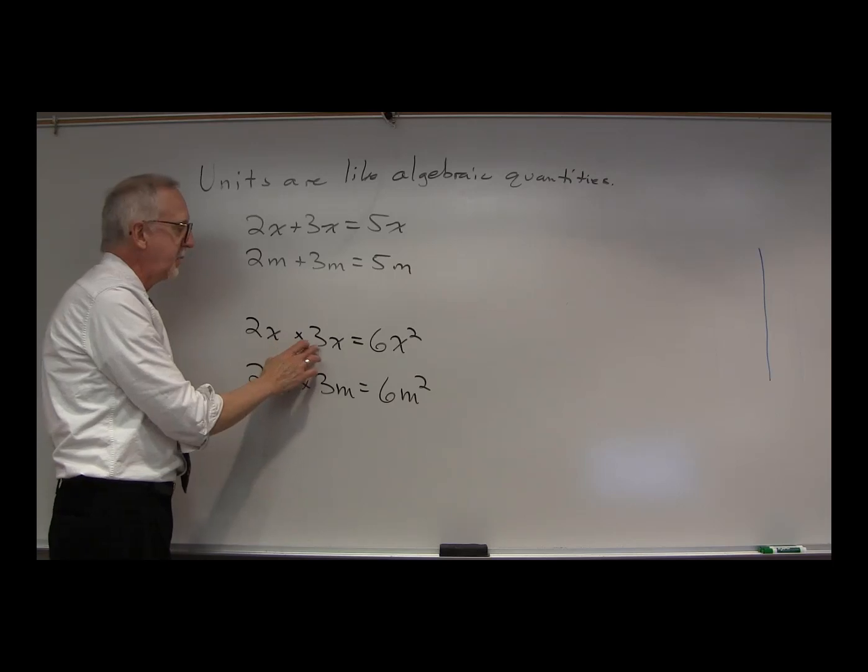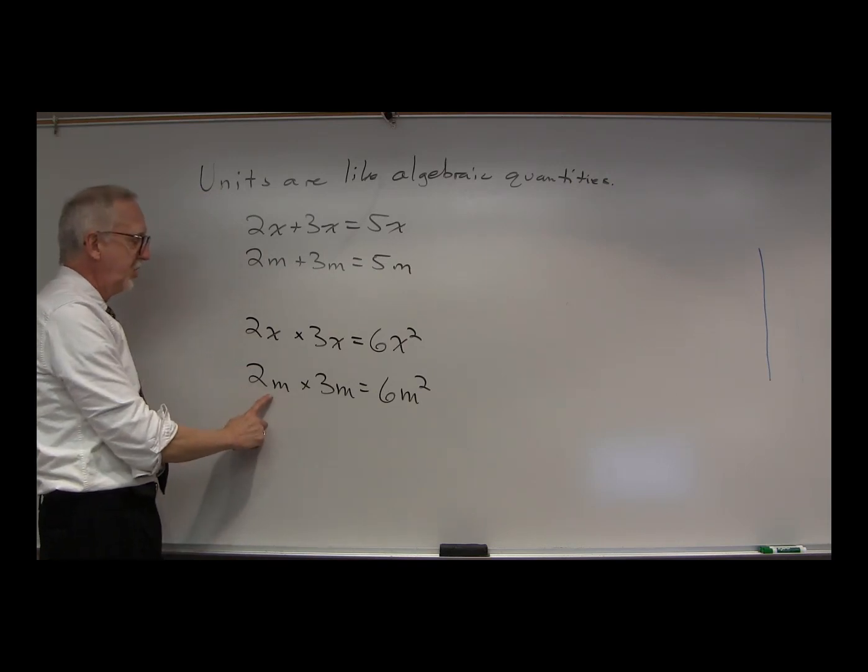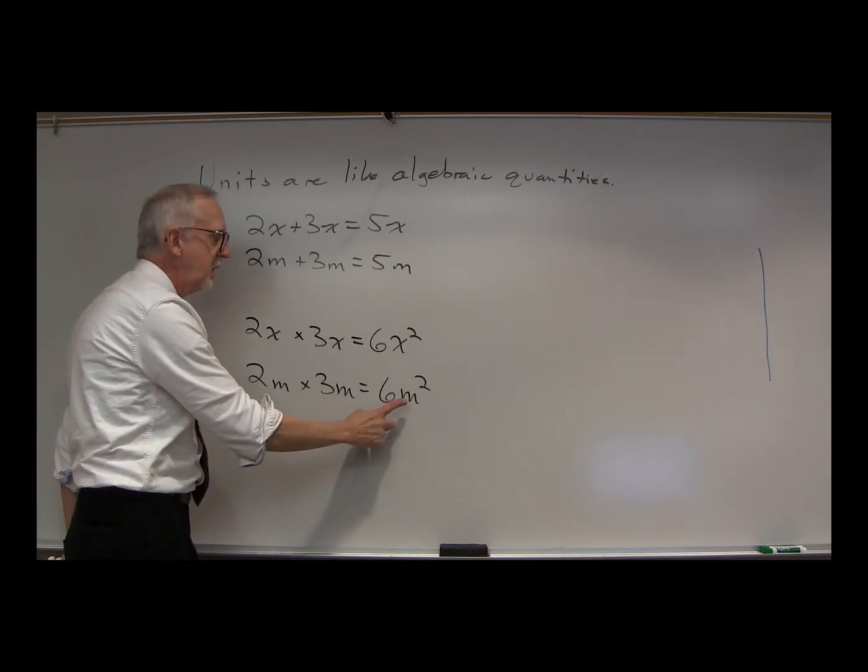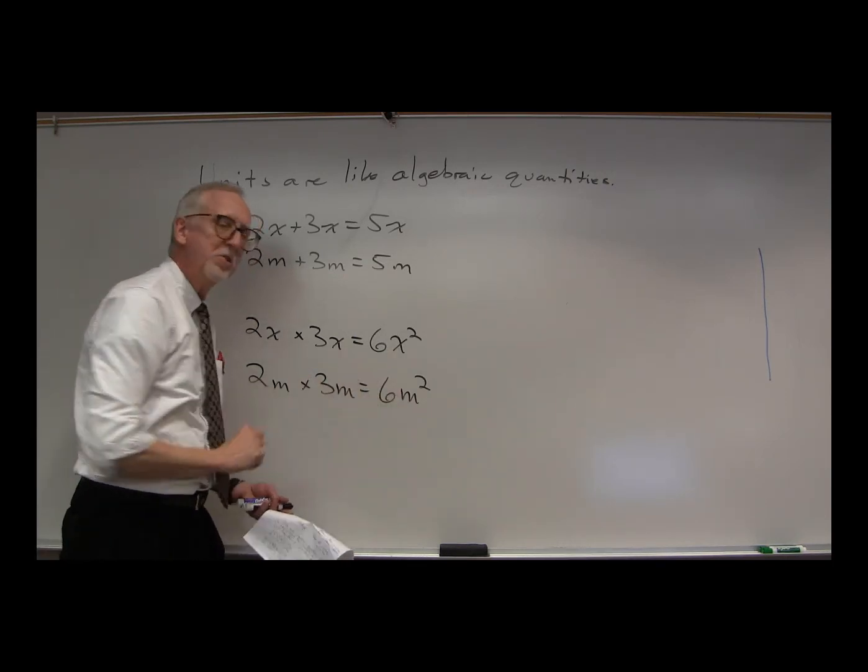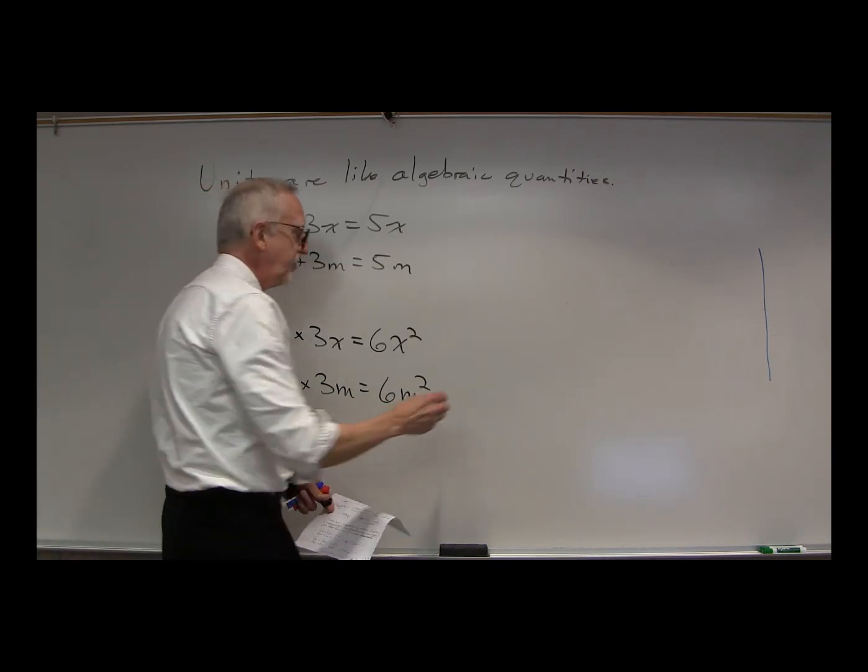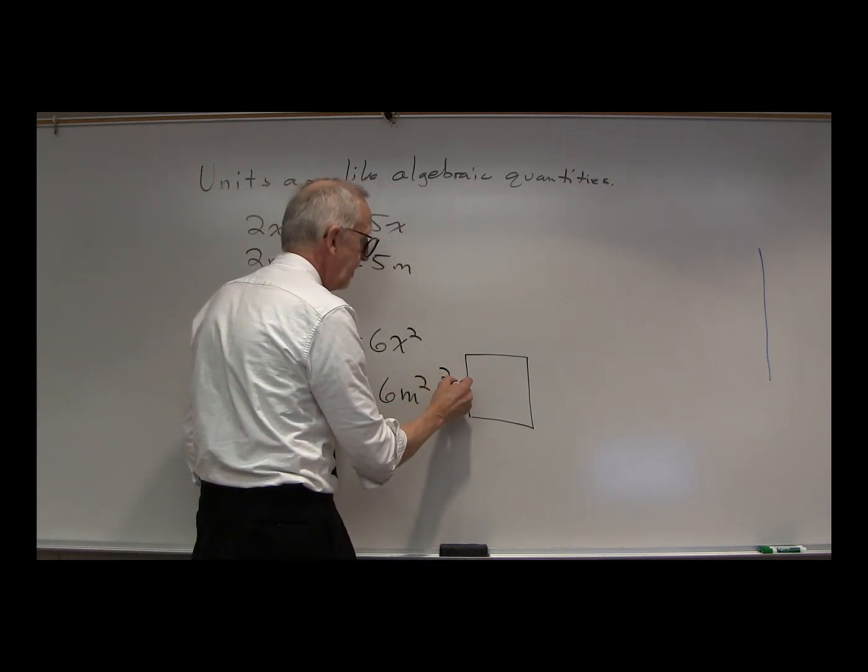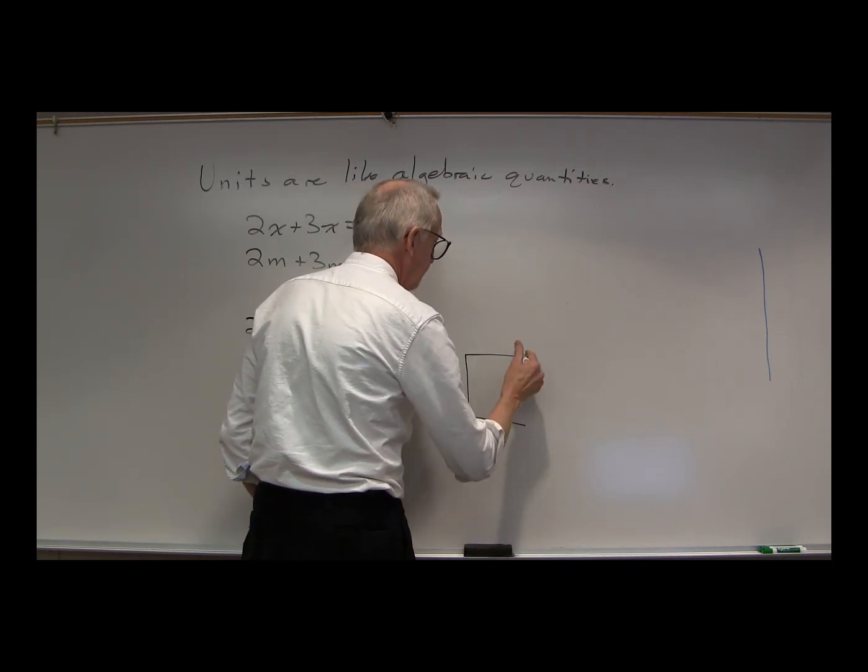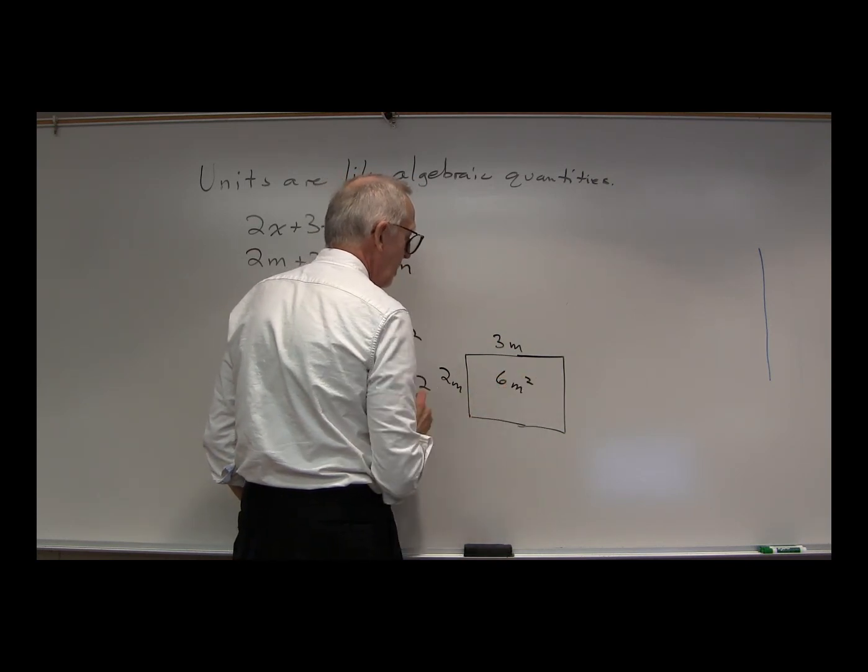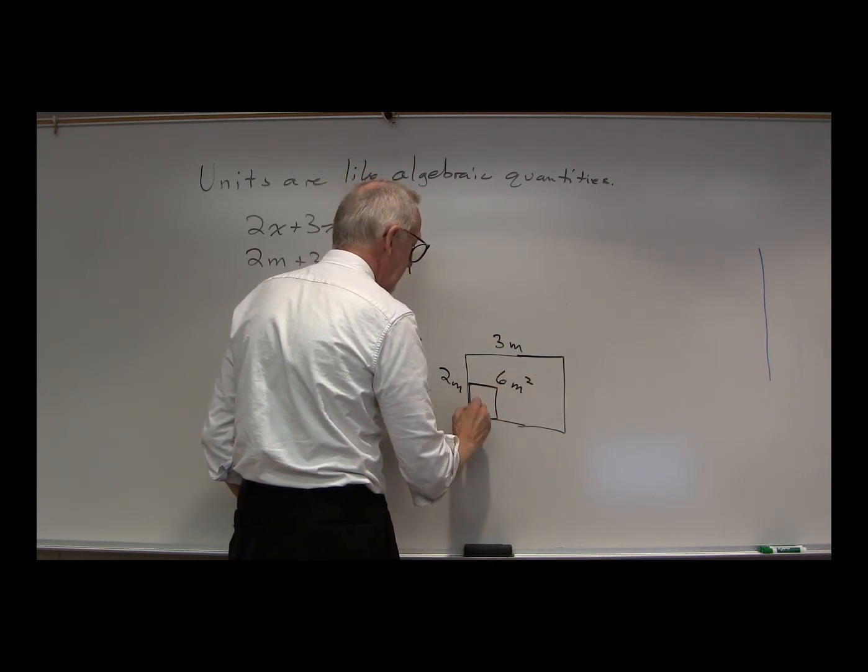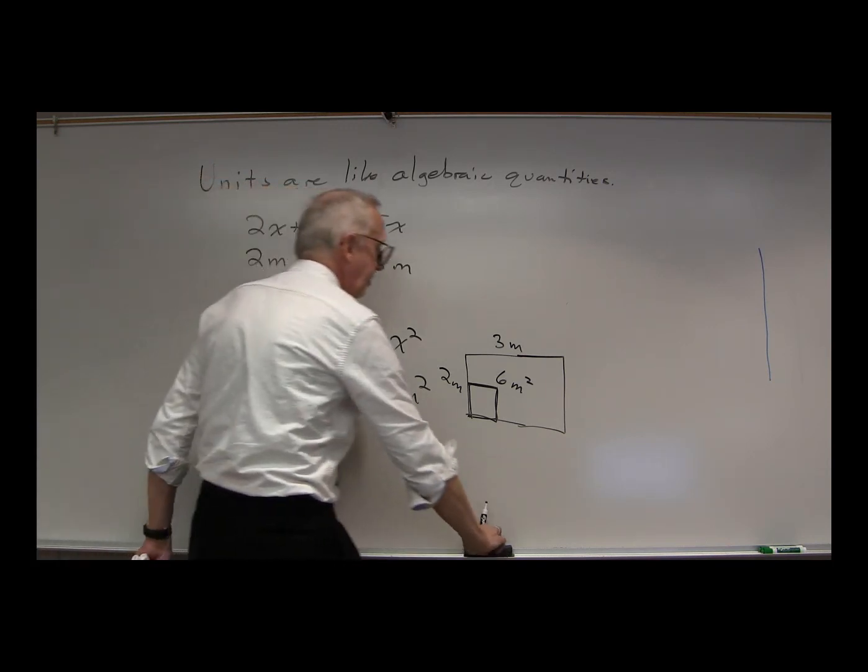What about multiplication? 2x times 3x. What's that? 2 times 3 is 6. x times x, x squared. In the same way, 2 meters times 3 meters would be 6 meters squared. What's a meter squared? Meters are units of distance. A meter squared is a unit of area. If you start talking about the area of something, like the area of a square or a rectangle, if this were 2 meters by 3 meters, this would have an area of 6 square meters. A square meter would be the area of a square that was 1 meter by 1 meter. Very much like algebraic quantities.